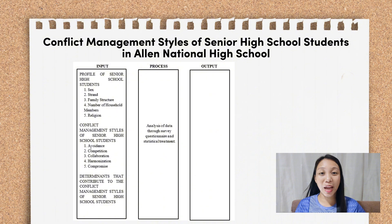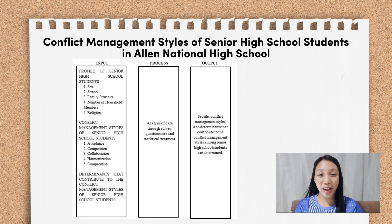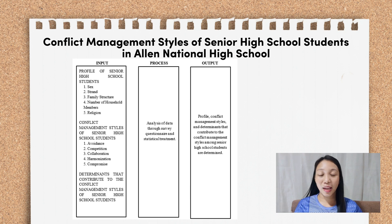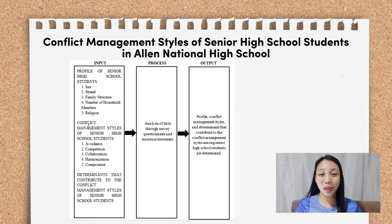Pressing ahead to the process — all you need to type in the figure is: analysis of data through survey questionnaire and statistical treatment. And finally, for the output, you will write: profile, conflict management styles, and determinants that contribute to the conflict management styles of senior high school students are determined. Do not forget to include the arrows from input to process and from process to output.